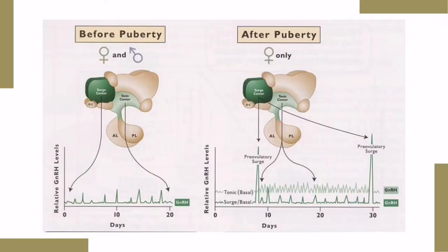This diagram shows the changes in hypothalamic secretion of gonadotropin-releasing hormone before and after puberty. Before puberty in the female and male, GnRH neurons in the tonic center and surge center of the hypothalamus release low-amplitude and low-frequency pulses of GnRH. After puberty in the female, the tonic center controls basal levels of GnRH, but they are higher than in the pre-pubertal female because the pulse frequency increases. The surge center controls the preovulatory surge of GnRH. However, the male does not develop a surge center.